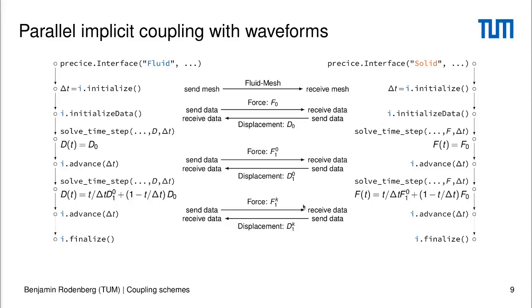In the end, of course, you do several iterations — here we have a superscript k — and you will also do several time windows. But in our example, we just go through the first time window, and after that I think everything should become clear.